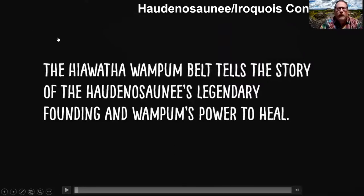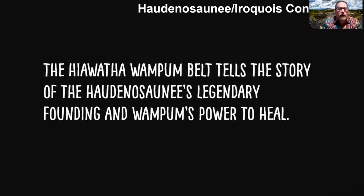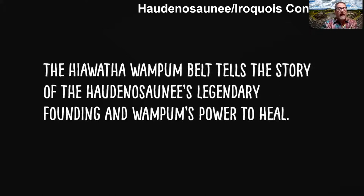This wampum belt made of purple and white shells is the basis of an important story in American history. These are the individuals brought in by Jefferson and Benjamin Franklin when they were writing the Constitution. They were trying to figure out how to have a national government and state rights at the same time. They invited the Haudenosaunee as honored guests, and the way the Haudenosaunee practiced their democracy is actually how we framed state rights versus national sovereign presidential rights in a federalist system. They are the longest continuous democracy in history, at about 900 years — we're currently at about 250.